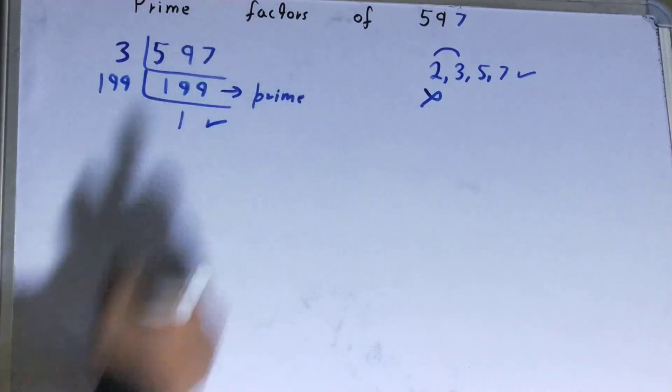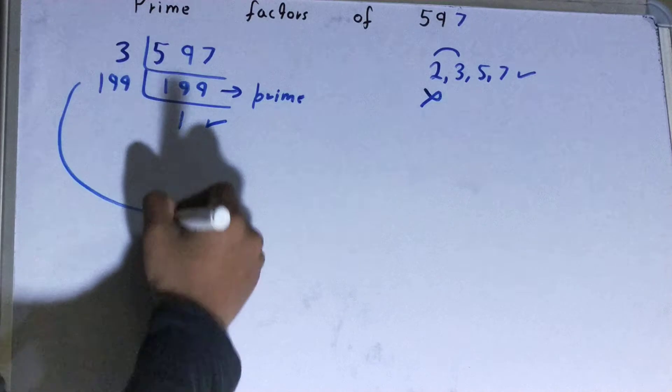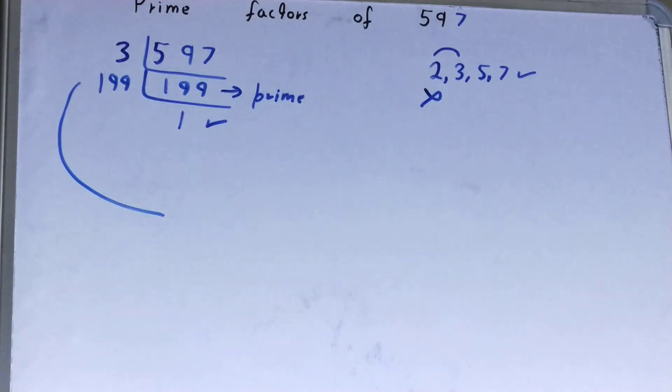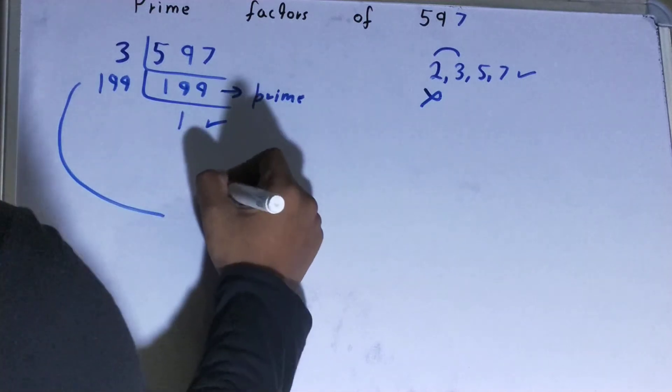Once you get one, the work is done. And whatever you have on the left-hand side will be the set of prime factors for the number 597, that is 3 times 199.